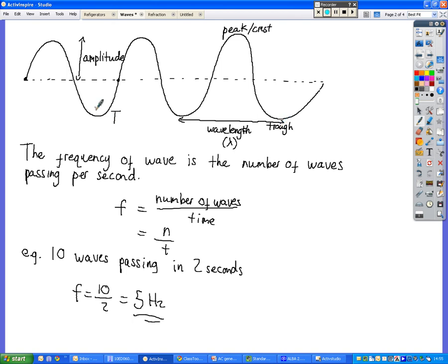The period is the time taken for one wave to pass. We've also got frequency as well. Remember that frequency tells you how frequent something is. It's basically telling you how many waves are passing every second. So we can calculate the frequency by doing the number of waves divided by the time taken. We've got an example there, 10 waves passing in 2 seconds, 10 divided by 2, 5 hertz. So 5 waves every single second.